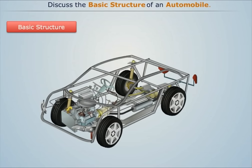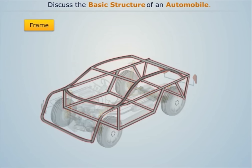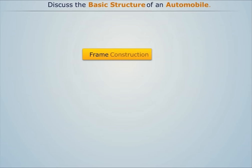Now let's discuss each of them in brief. The frame is the main structure of an automobile that bears most of its weight. Frame construction is generally done in two ways: conventional construction and frameless construction.